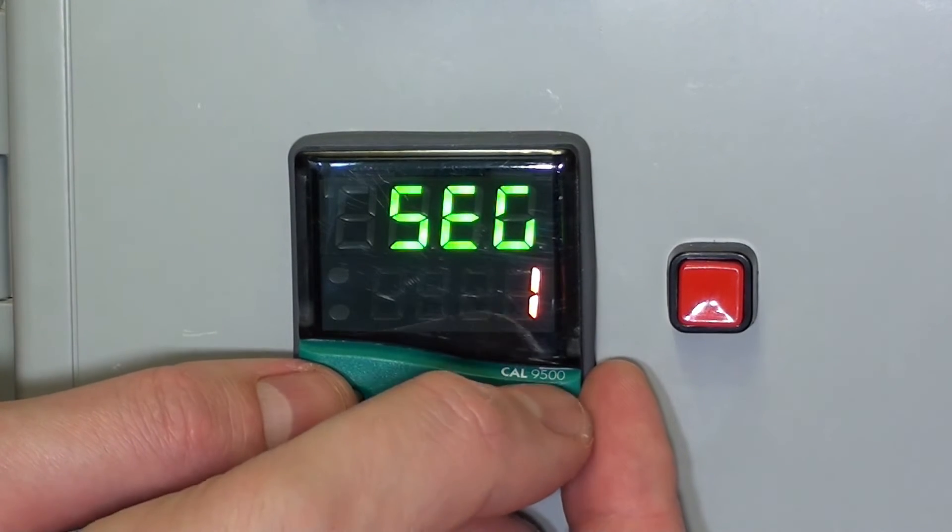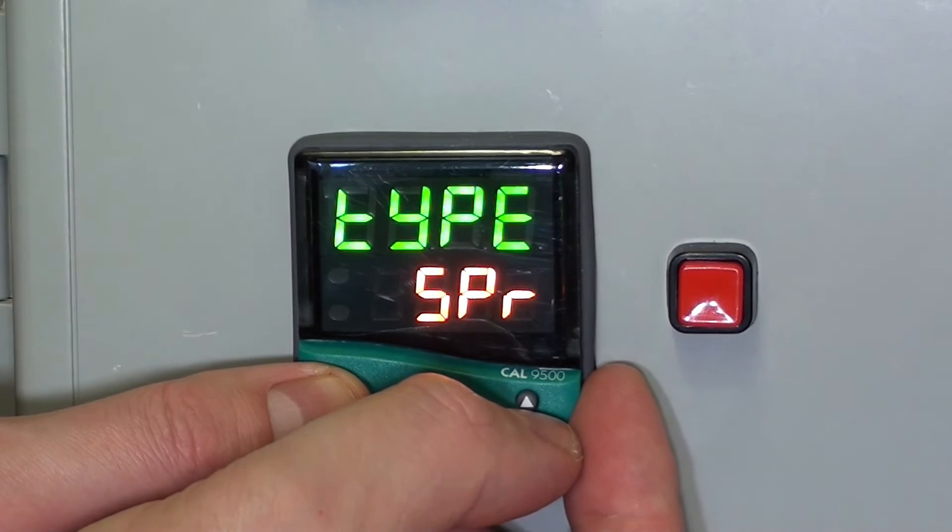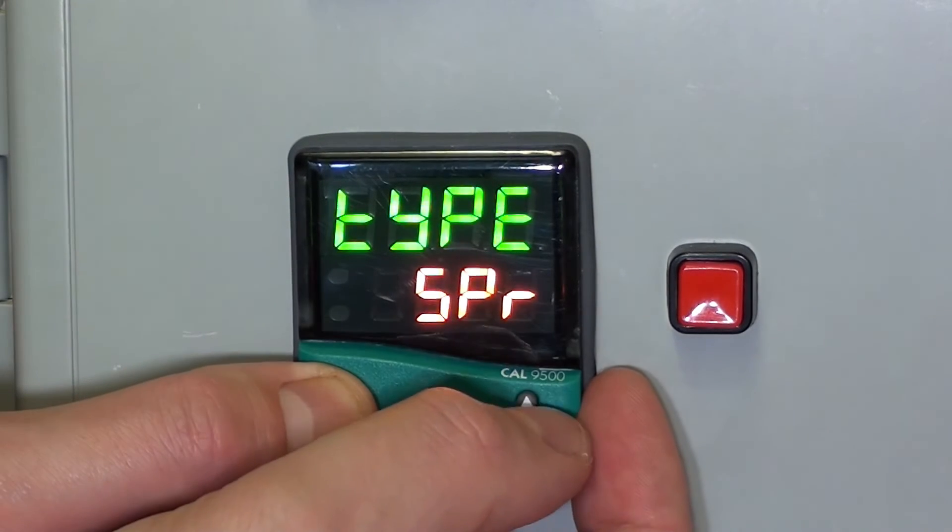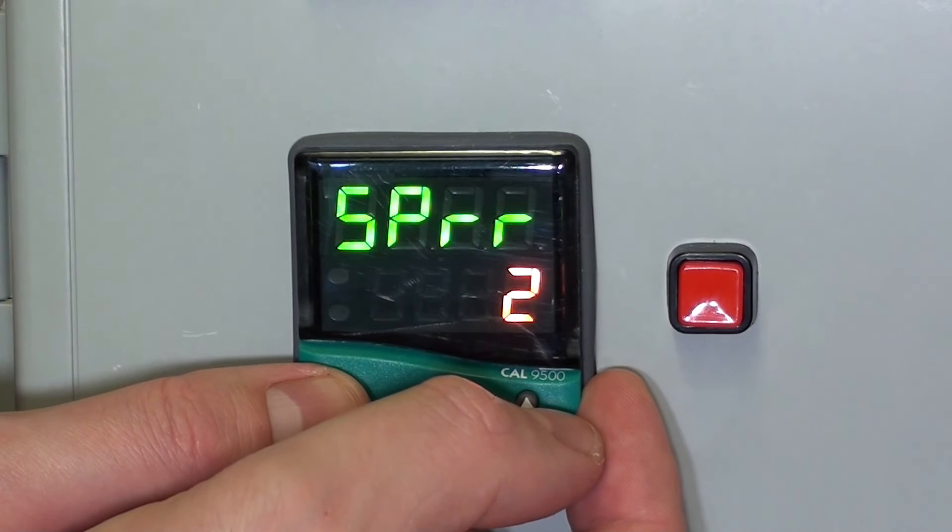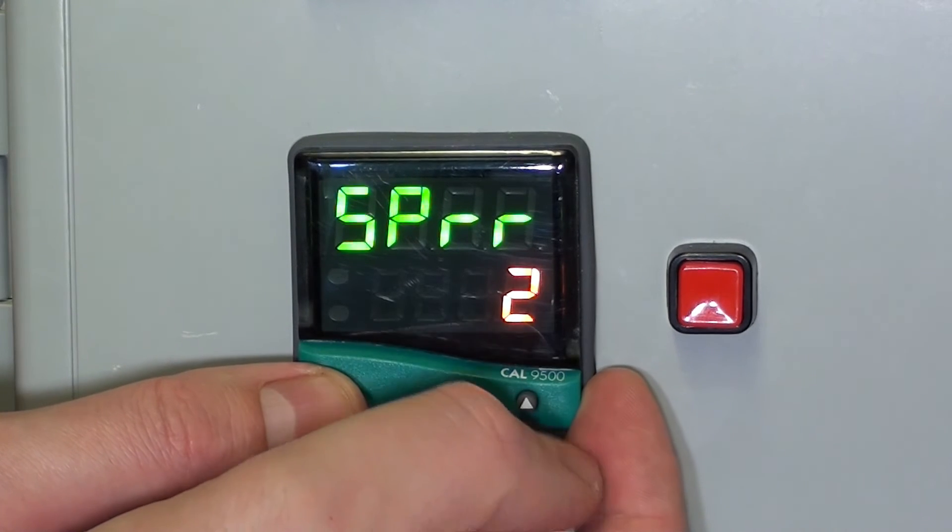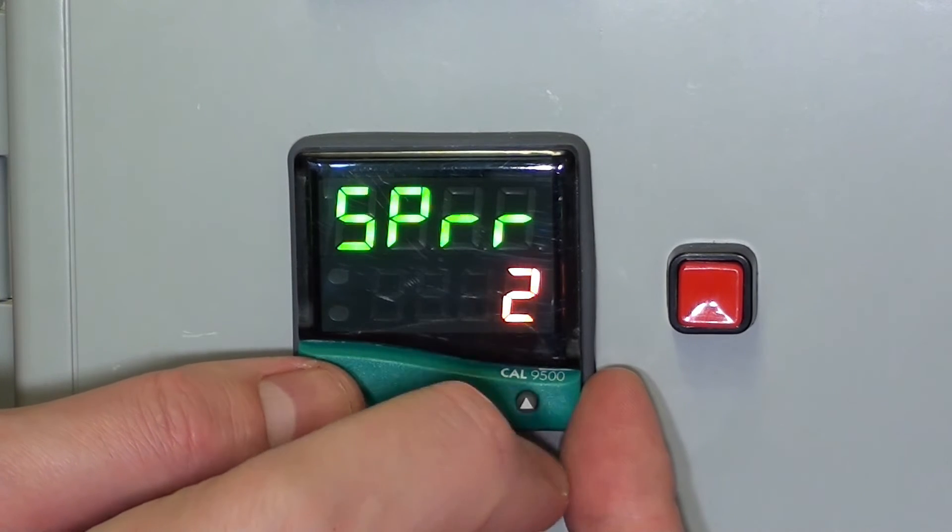So, the first segment is type ramp. Set point ramp, set point ramp, and the set point ramp rate is 2, so it will be a steady ramp rate.